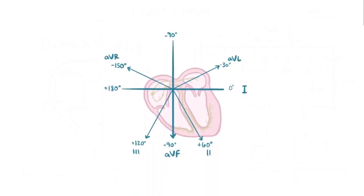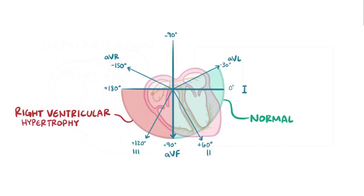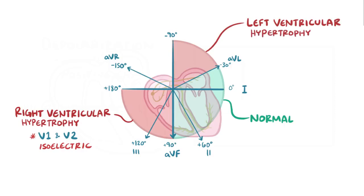Alright, as a quick recap, a normal heart axis is between negative 30 and plus 90 degrees. Right ventricular hypertrophy can cause the axis to be between plus 90 and plus 180 degrees, and can sometimes cause the V1 and V2 chest leads to appear isoelectric. Left ventricular hypertrophy can cause the axis to be between negative 30 and negative 90 degrees, and can sometimes cause the V5 and V6 chest leads to appear isoelectric.